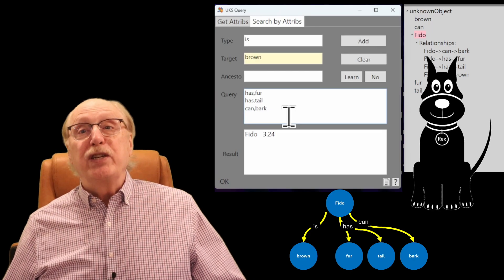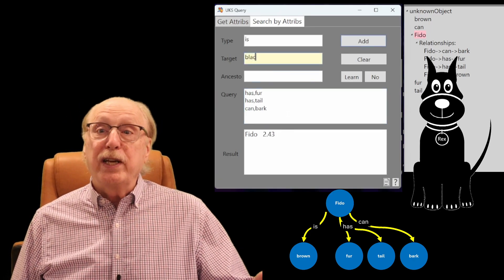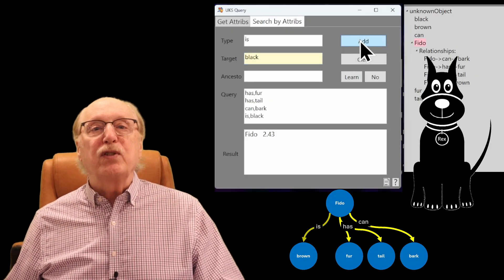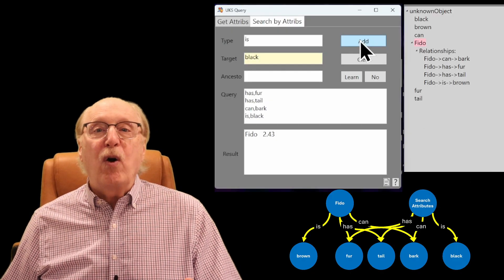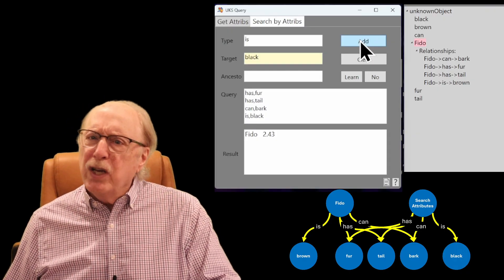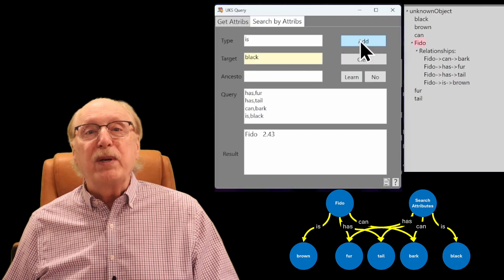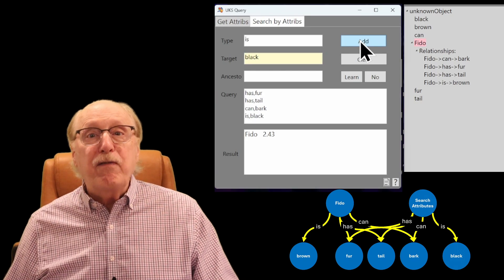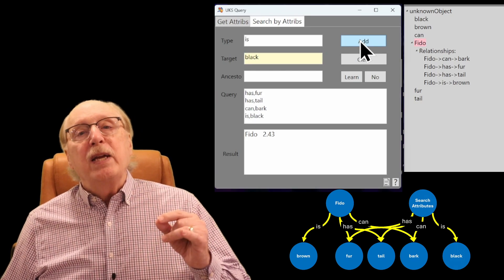Now a new observation occurs. You see something that shares many of the same attributes: fur, a tail, and barking, but this one is black. The system again searches for a matching node. The closest match is still Fido, since it's the only node with similar attributes. But when our internal observer says, no, this is different, that rejection triggers something fundamental. It tells the system that this new observation is not Fido, even though it shares many attributes.